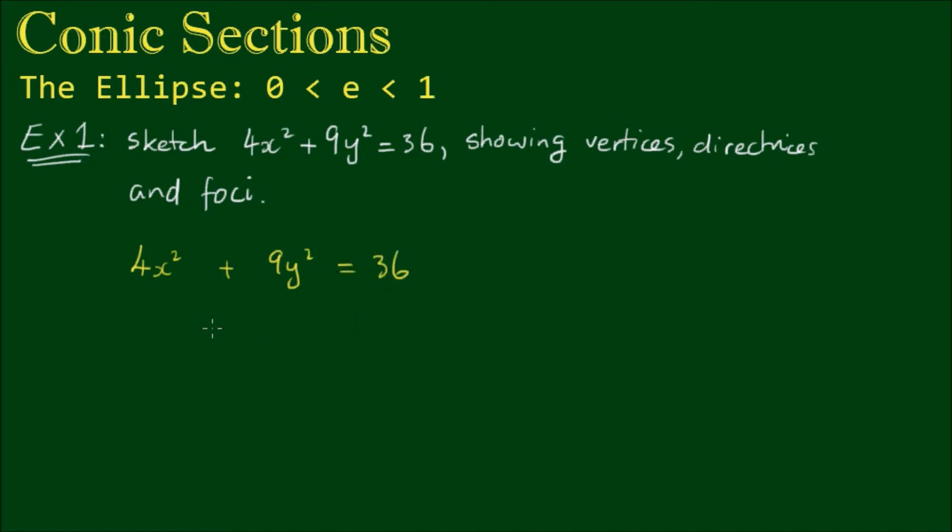Now this is an ellipse centered about the origin. And the reason why it's centered at the origin is because there are no linear x or y terms, so there are no first order x or y terms in this equation to offset the center coordinates from zero.